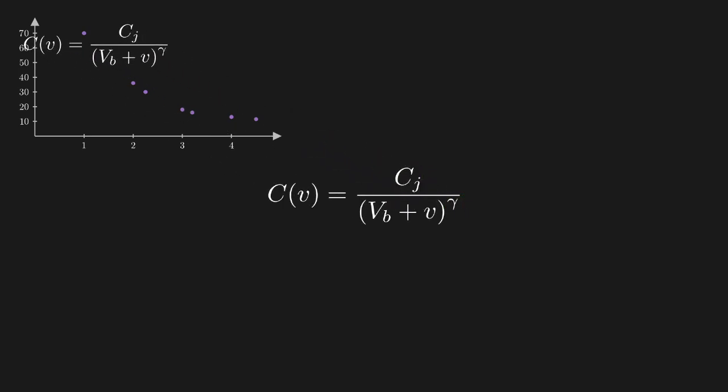Once again, this doesn't look like a linear combination of functions, so we'll have to do some more manipulation. And just like last time, I've chosen an example where we have a variable, this time gamma, in an exponent, so we'll try taking the log of both sides.